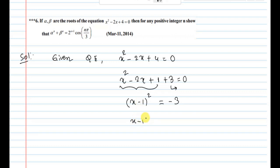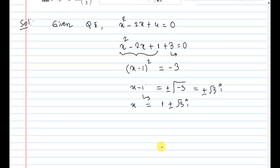x minus 1 whole square equal to negative 3. x minus 1 equal to plus or minus root negative 3. Therefore x equal to 1 plus or minus root 3i. We have two roots.